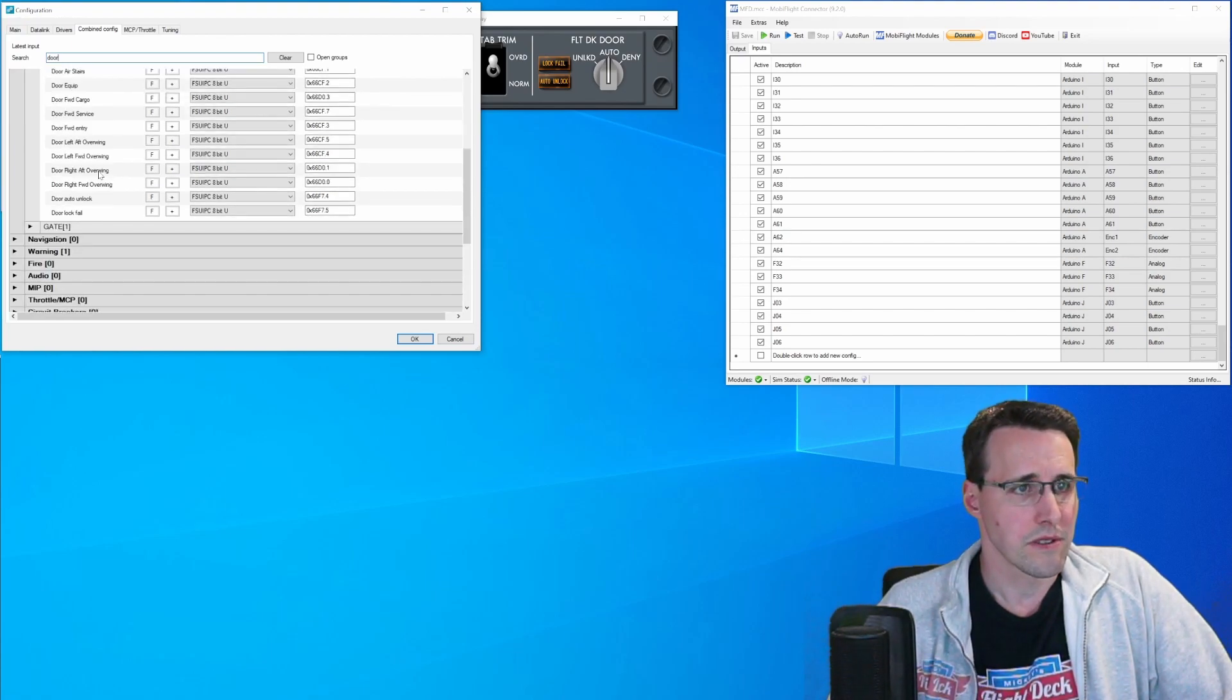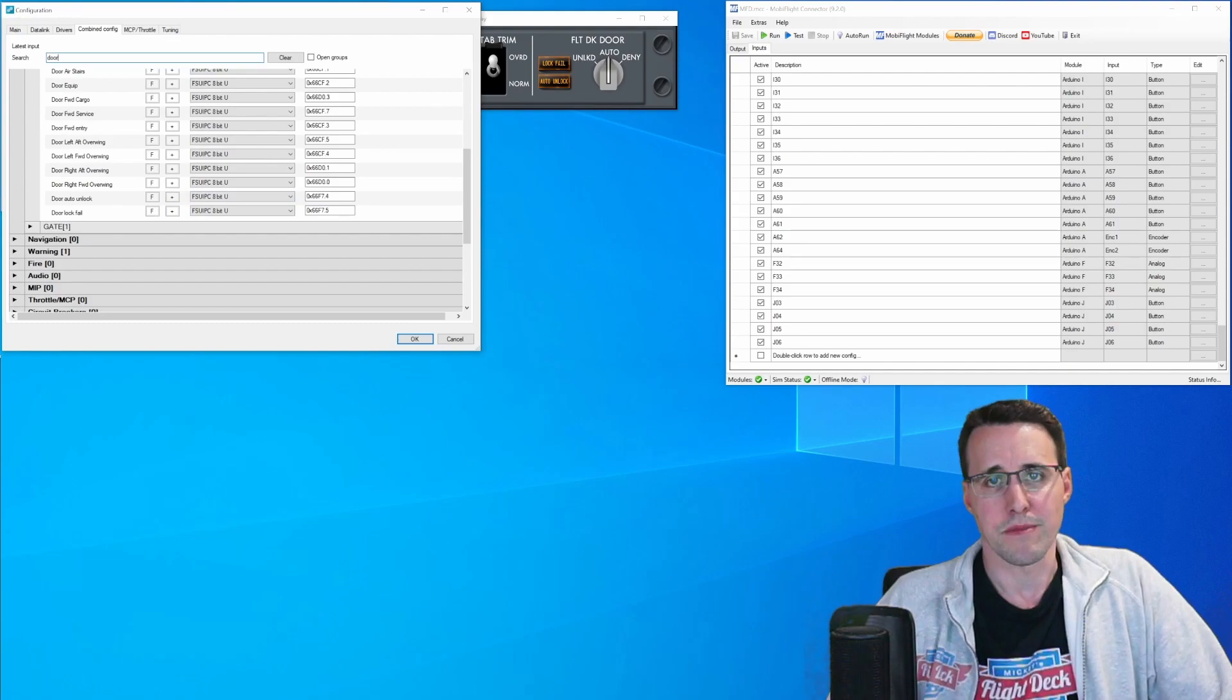And the LEDs can be found here under Indicator. There, here down, we have the door auto unlock and door lock fail annunciator where I have declared an FSUAPC offset.